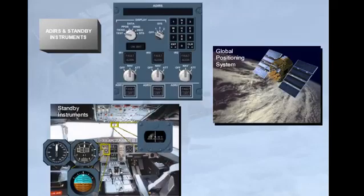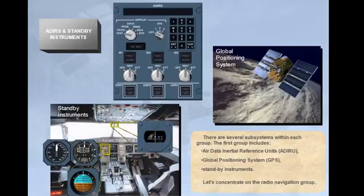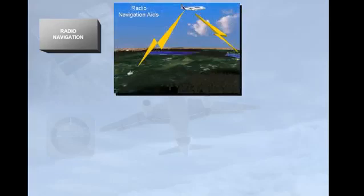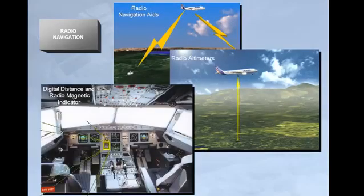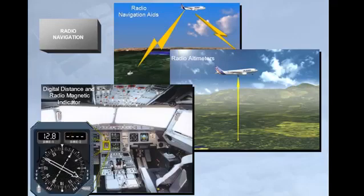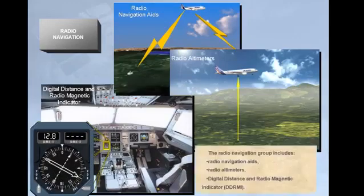Let's concentrate on the radio navigation group. The radio navigation group includes radio navigation aids, radio altimeters, and Digital Distance and Radiomagnetic Indicator (DDRMI).